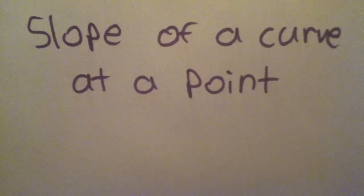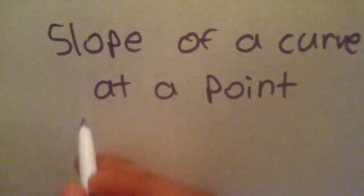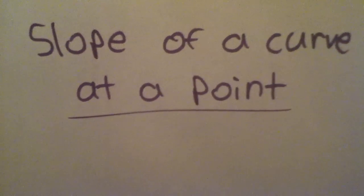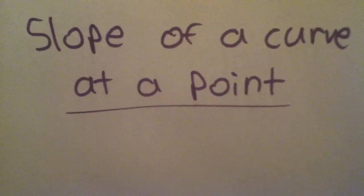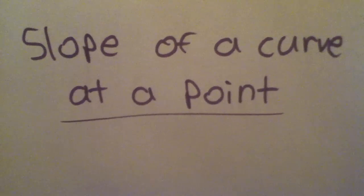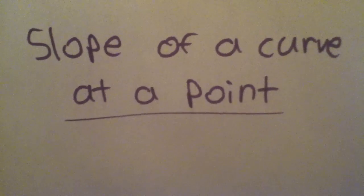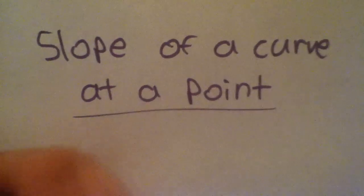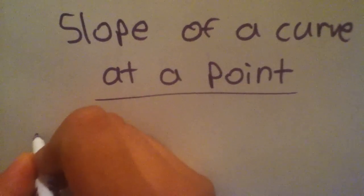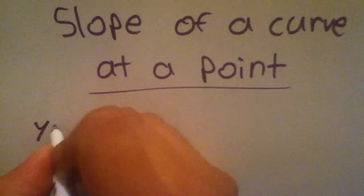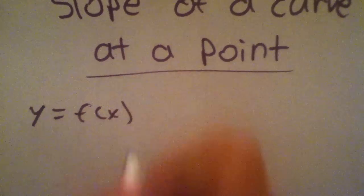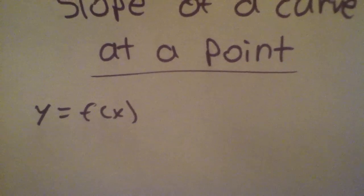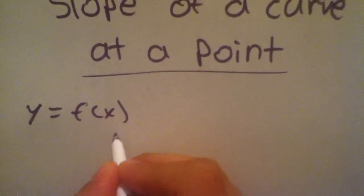Let's discuss the slope of a curve at a point. The slope of a curve is defined as the average rate of change. Let's assume a function y is equal to f of x, and let's assume two points on this function, a and b.